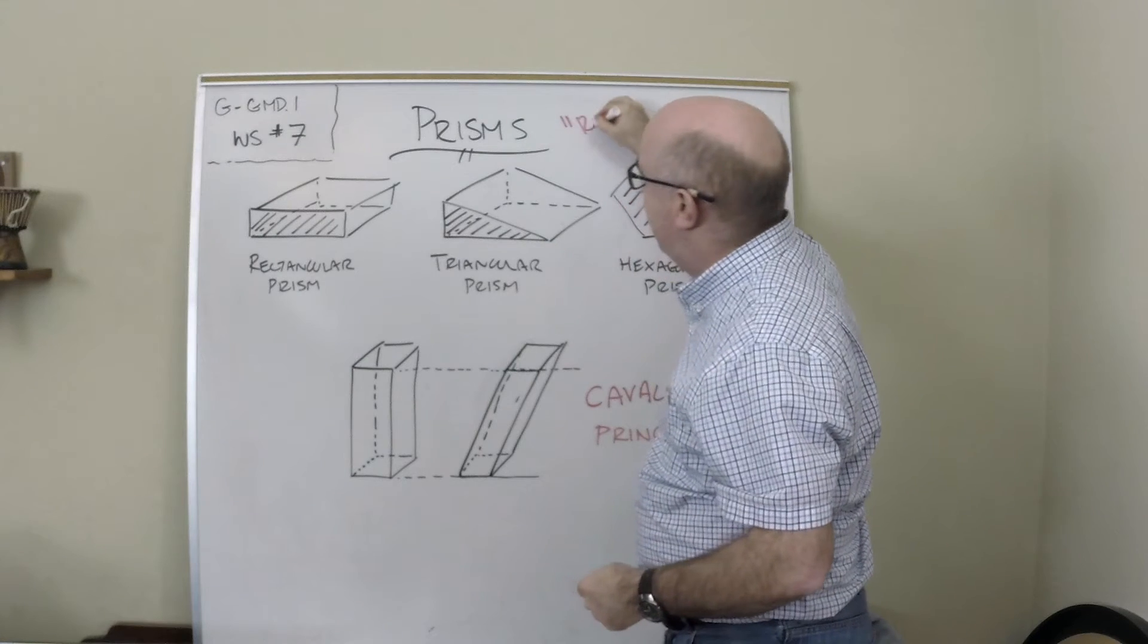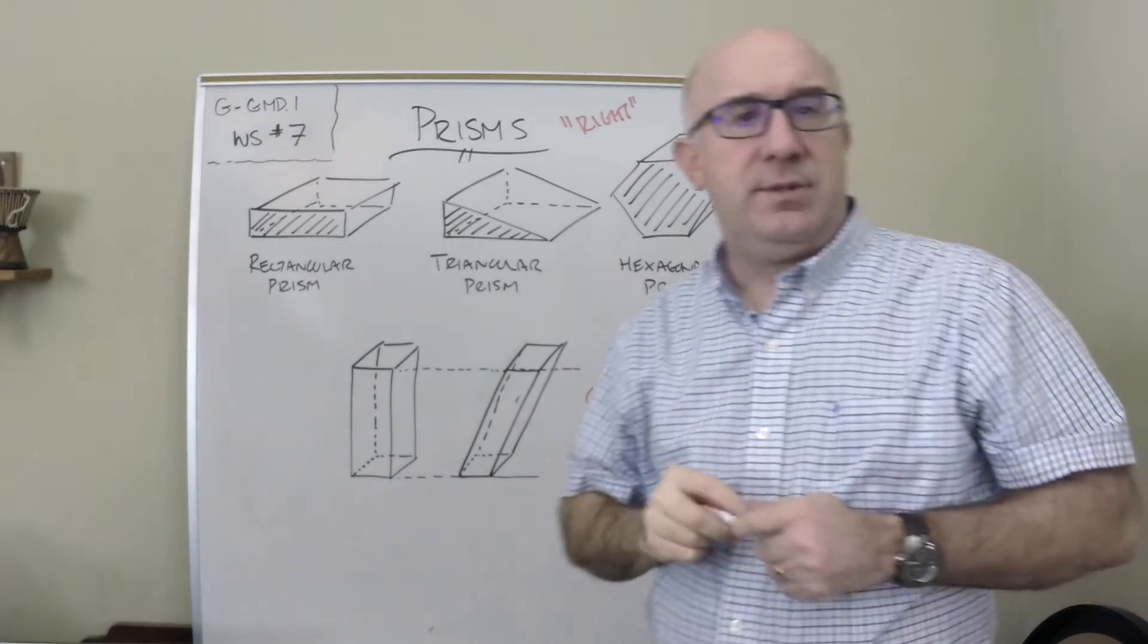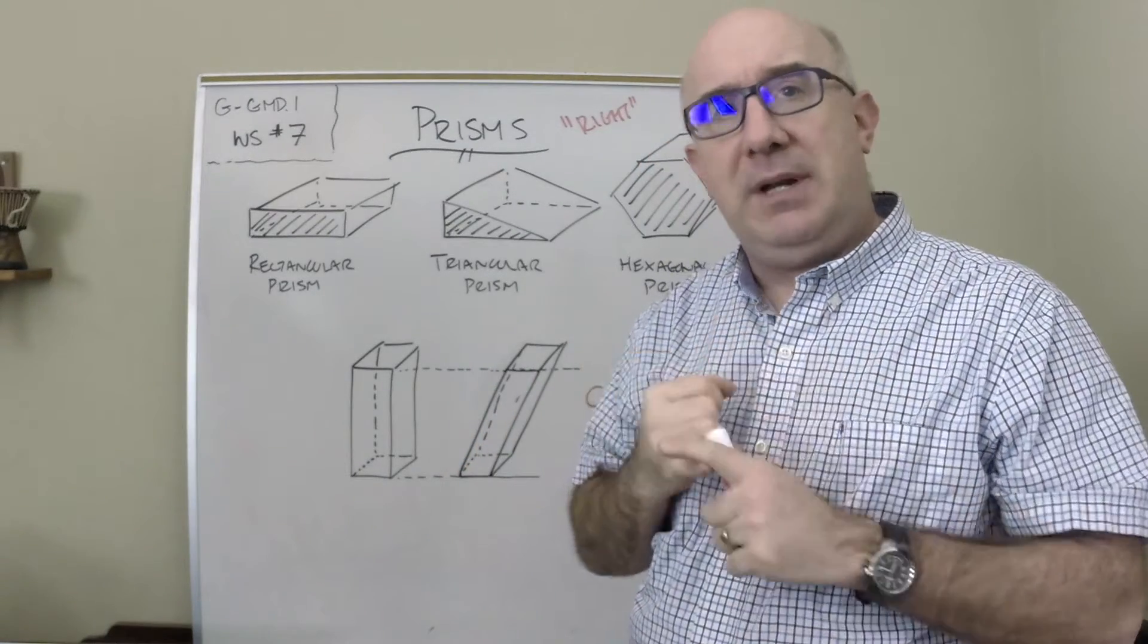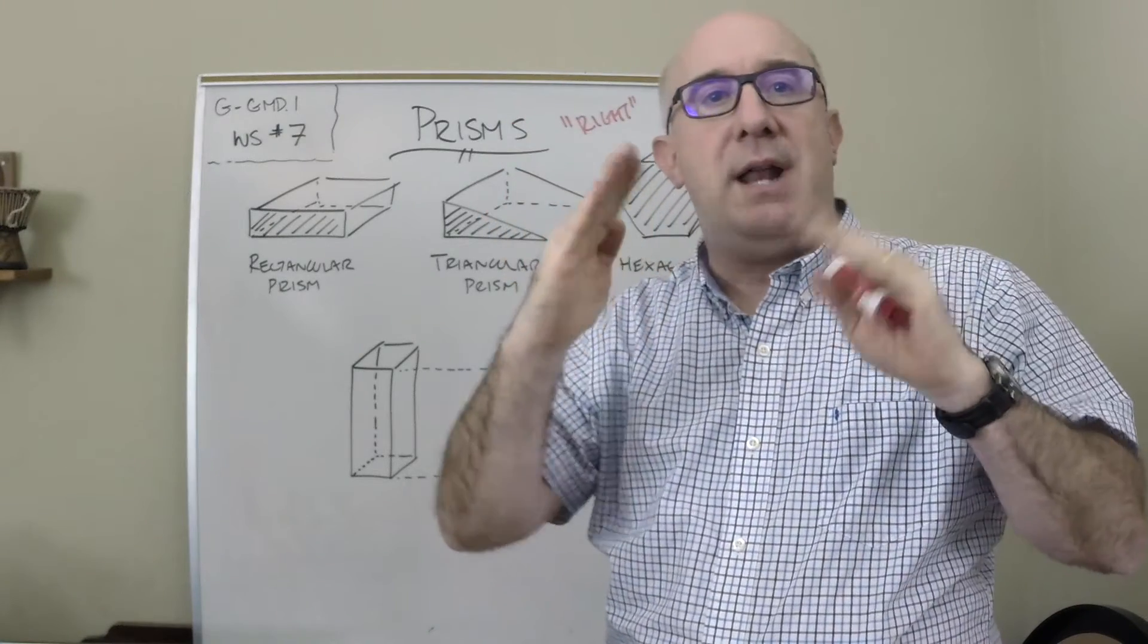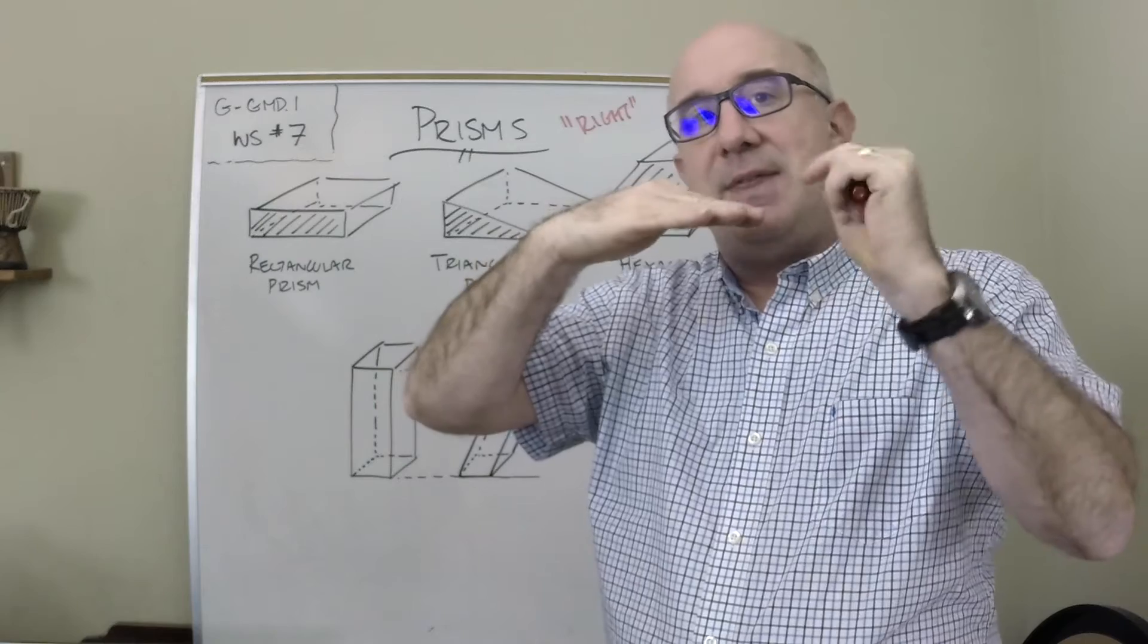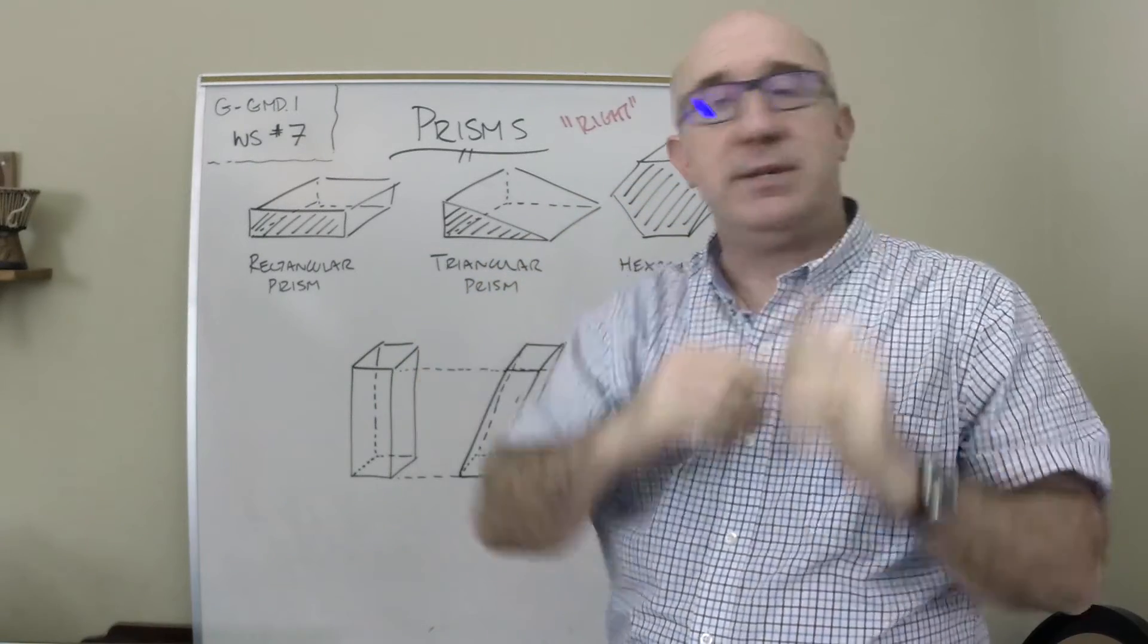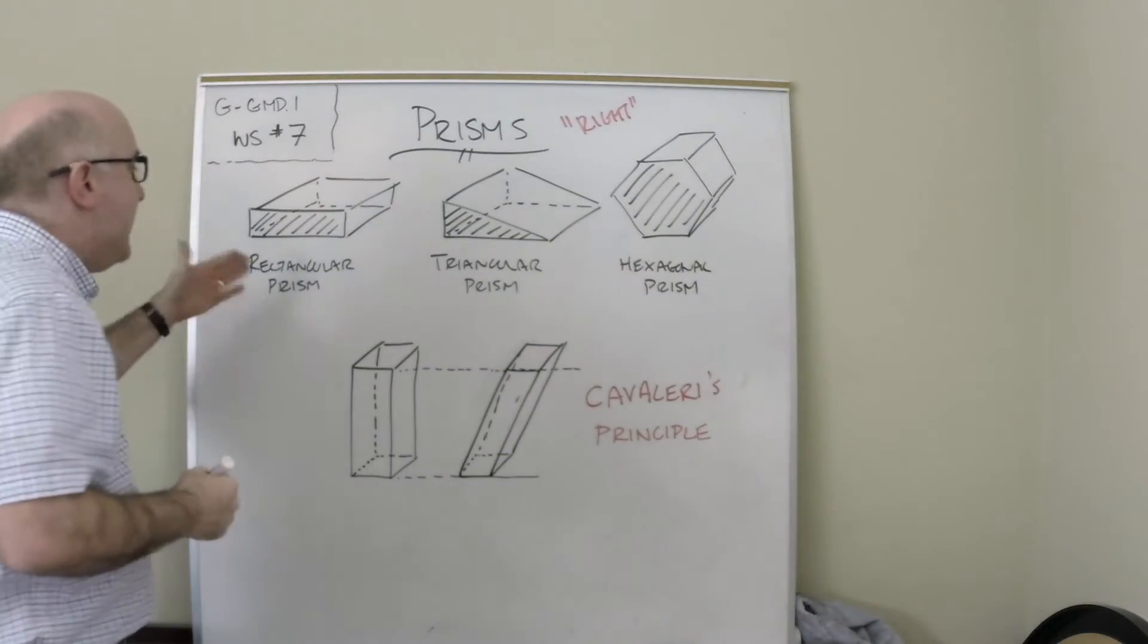Now you have two types of prisms, or two types of solids of this variety: you have oblique, which means the shape could be kind of tilted, or you could have it where the base and the lateral sides are perpendicular. That's called a right prism.